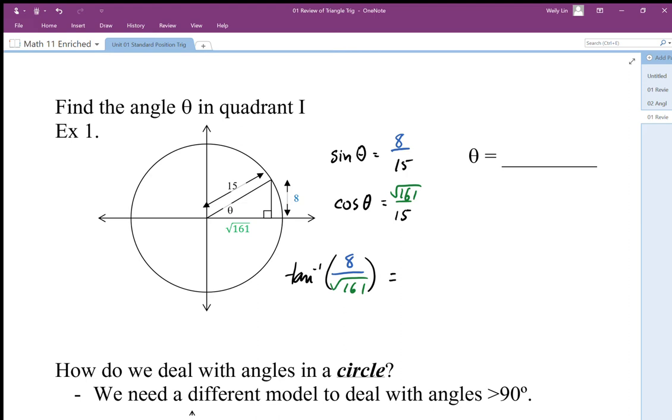Let me get my calculator. I put this into tangent: 8 divided by square root 161, which is 0.630. I'm going to undo that with arc tan and I get an angle of 32.23 degrees, which looks about right.